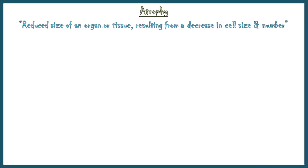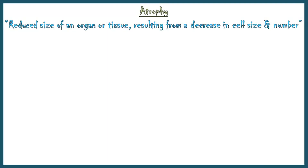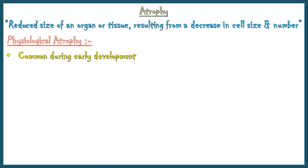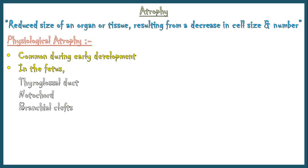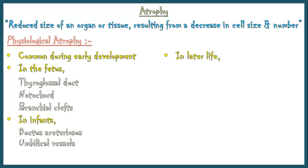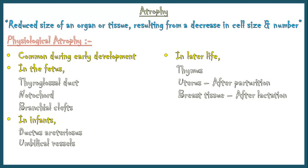Atrophy is reduced size of an organ or tissue resulting from a decrease in cell size and number. It can be physiological or pathological. Physiological atrophy is common during early development. In the fetus, the thyroglossal duct, notochord, and branchial clefts undergo atrophy and disappear. During infancy, ductus arteriosus and umbilical vessels undergo atrophy. In later life, the thymus gland, uterus after parturition, and breast tissue after lactation undergo physiological atrophy.